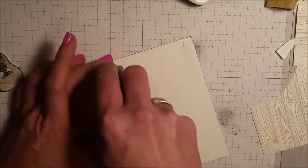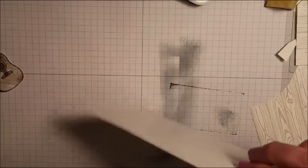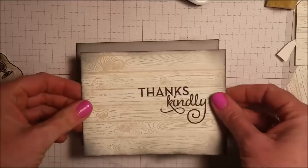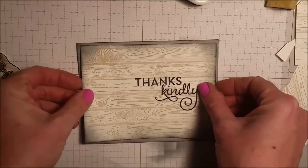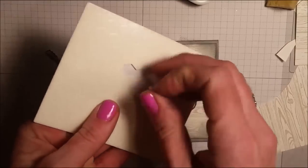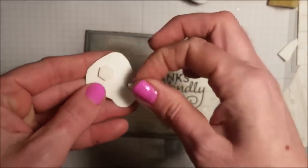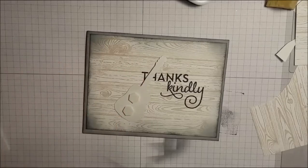So I'm going to put this layer on a basic gray card base that I've already sponged the edges with black. I'm going to take some dimensionals and put them behind the guitar. And I want a little piece on the end.